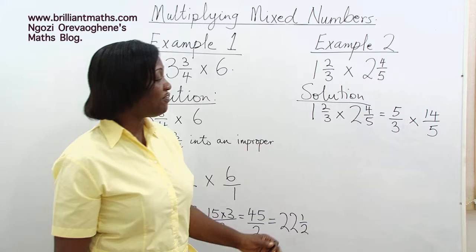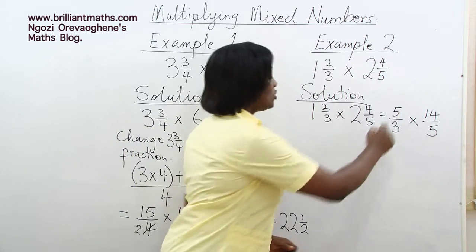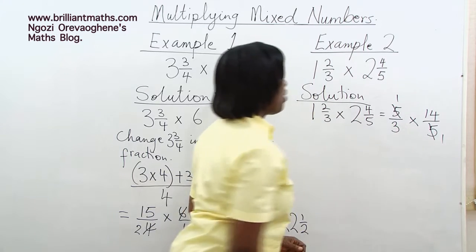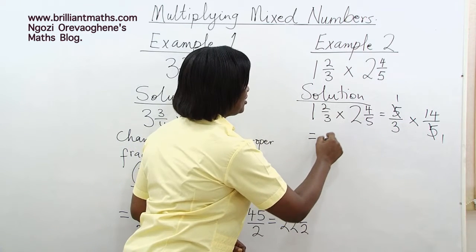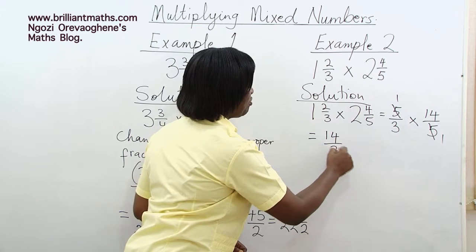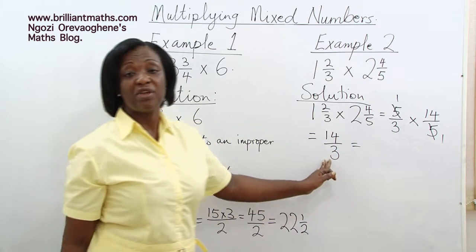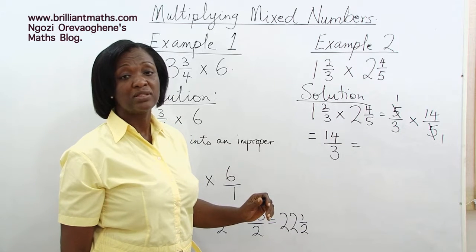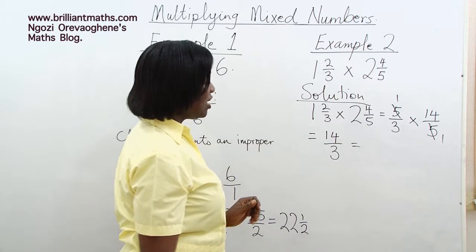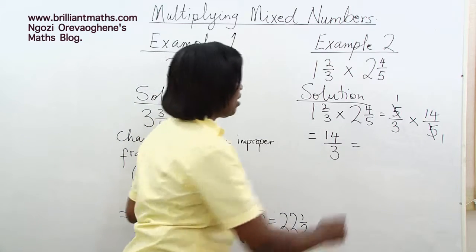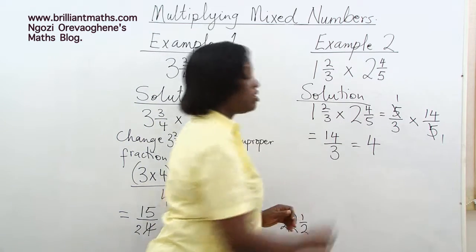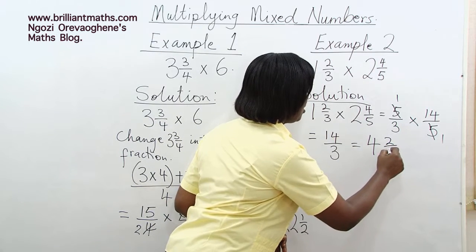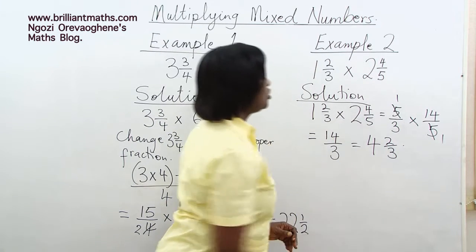Immediately, we can see that 5 is common. We divide 5 by 5 to get 1. What do we have left? 14 over 3. 14 over 3 is an improper fraction. We change it into a mixed number. 3 in 14 is 4, remainder 2. Our answer is 4 2 thirds.